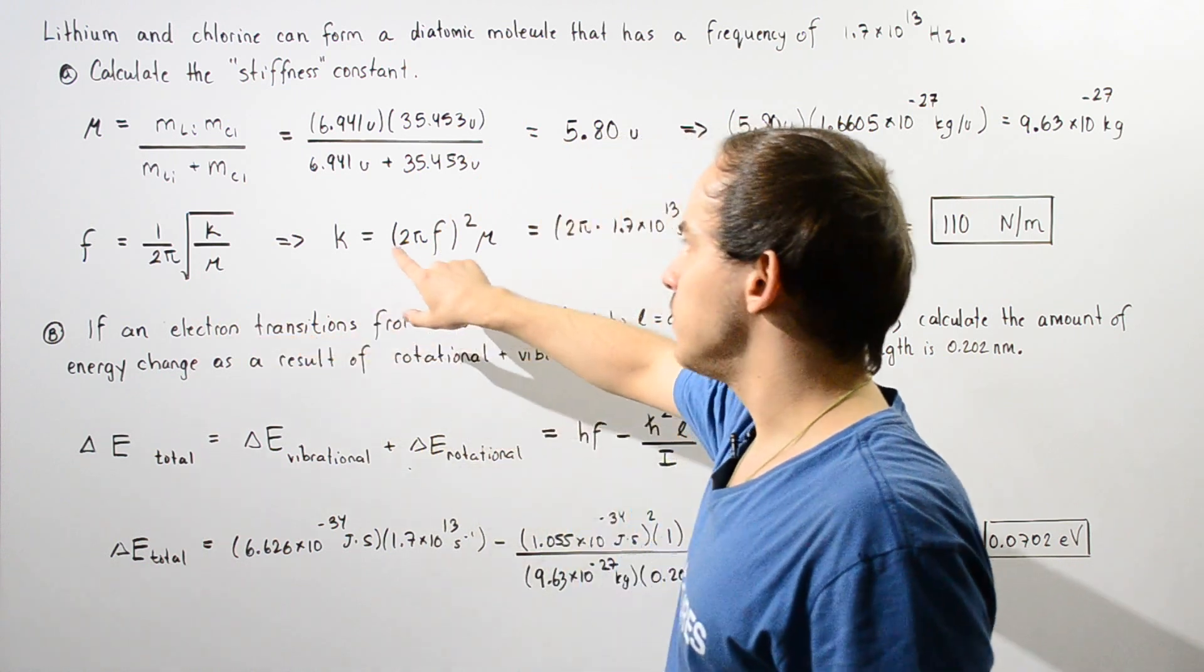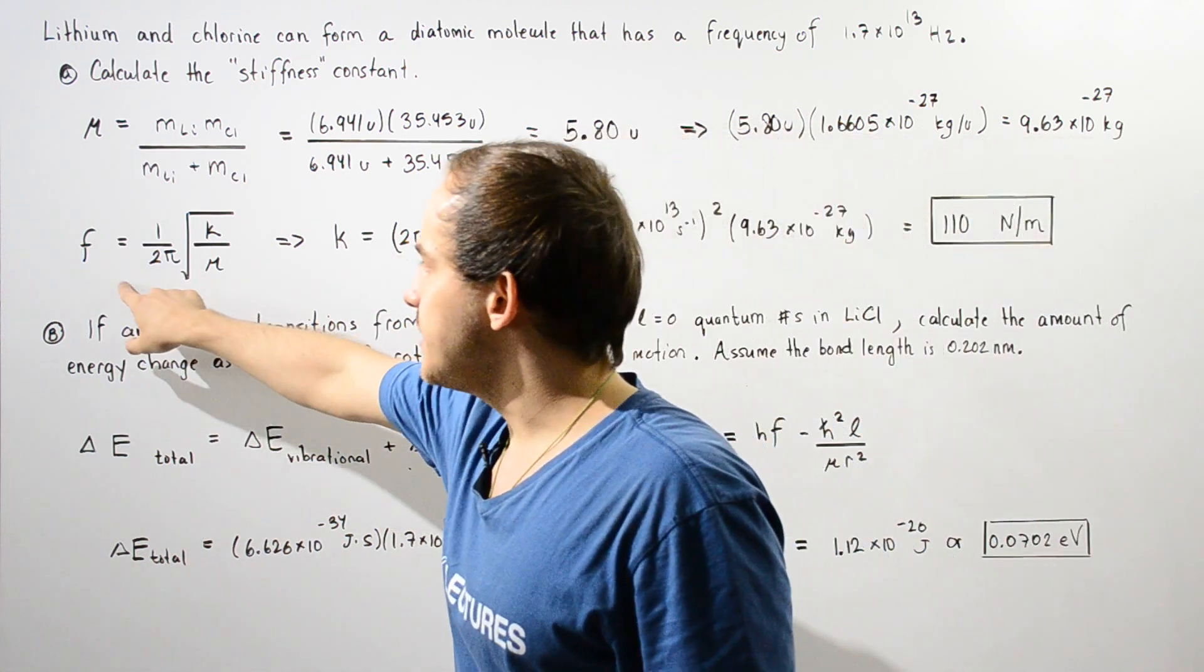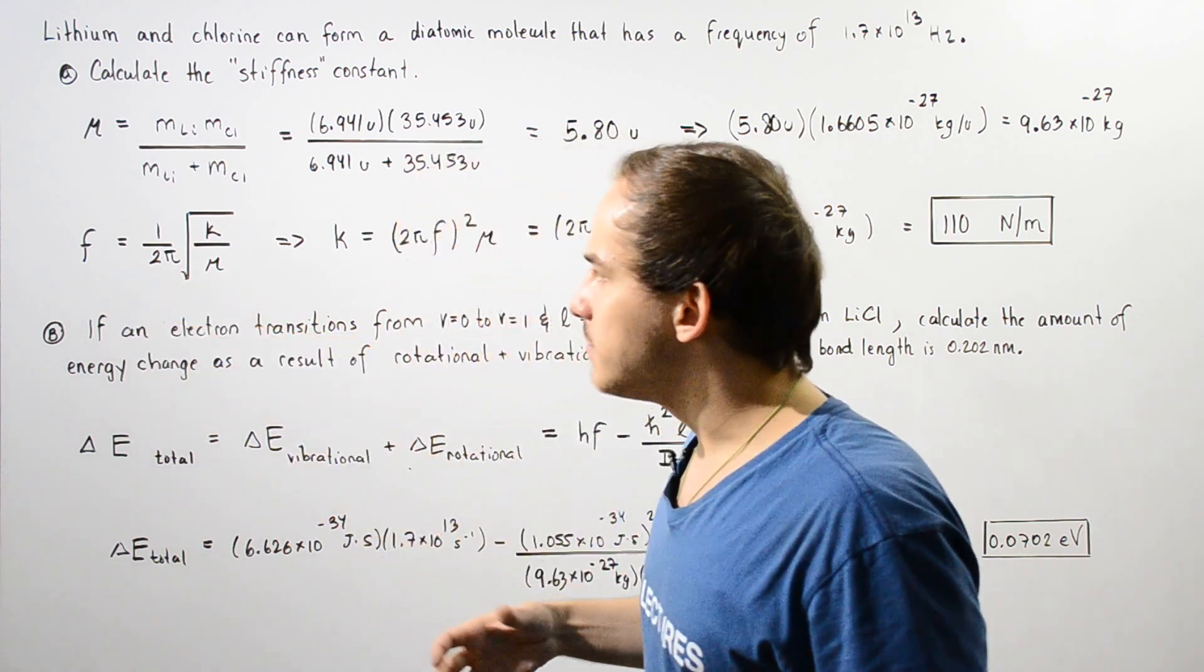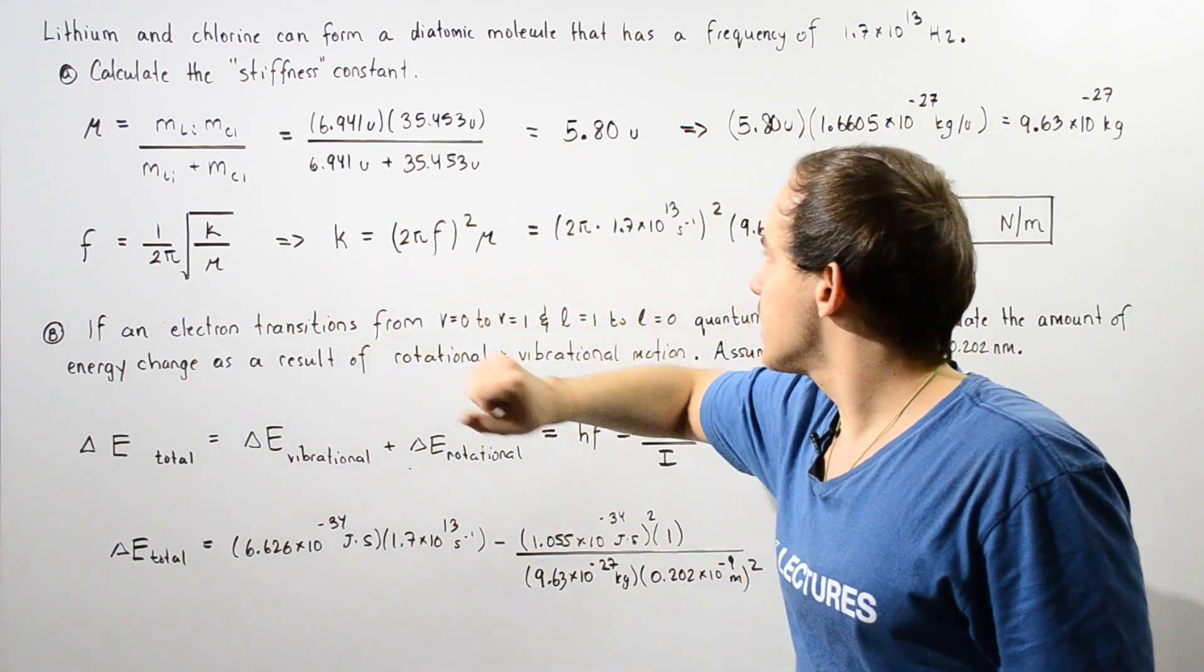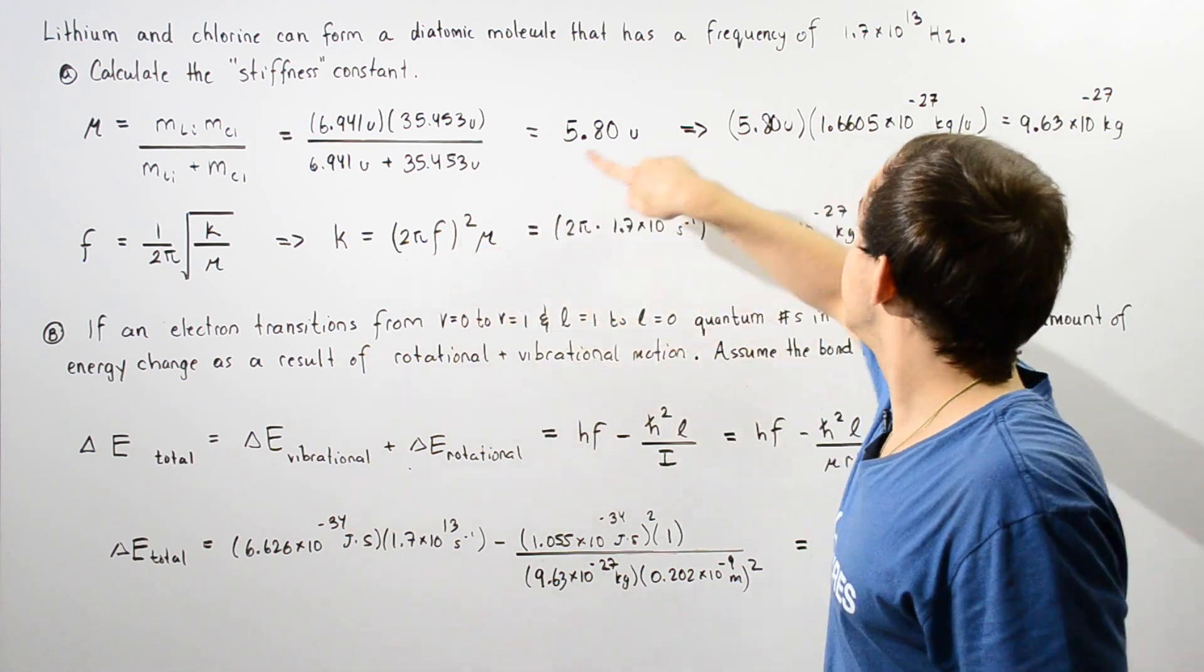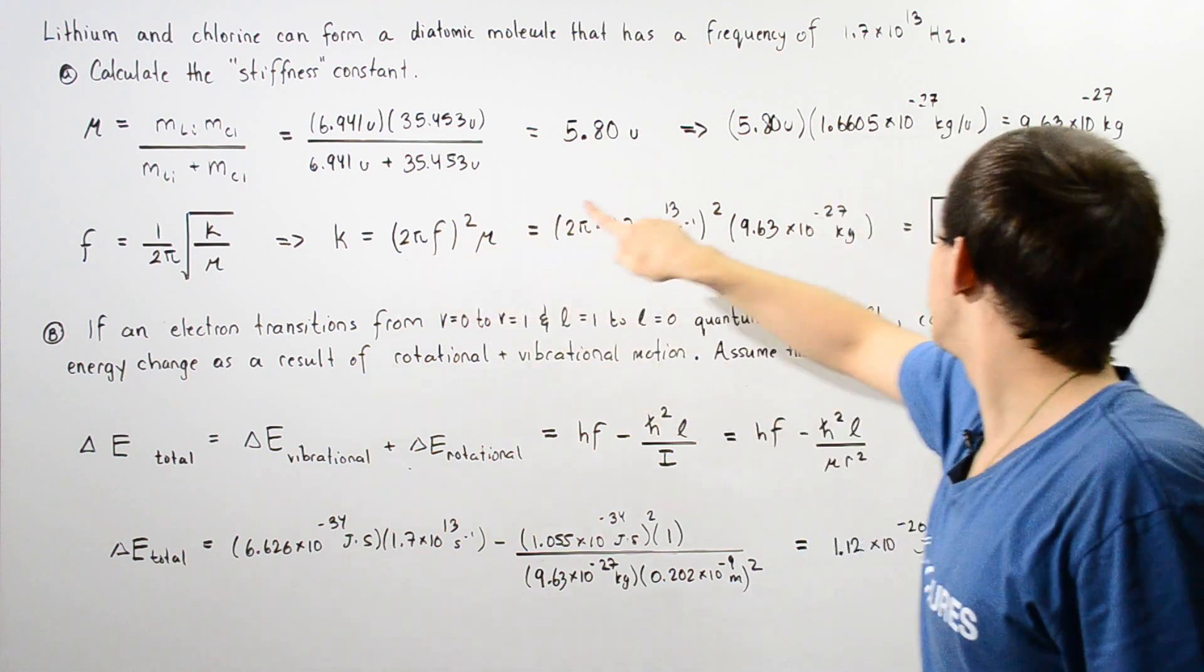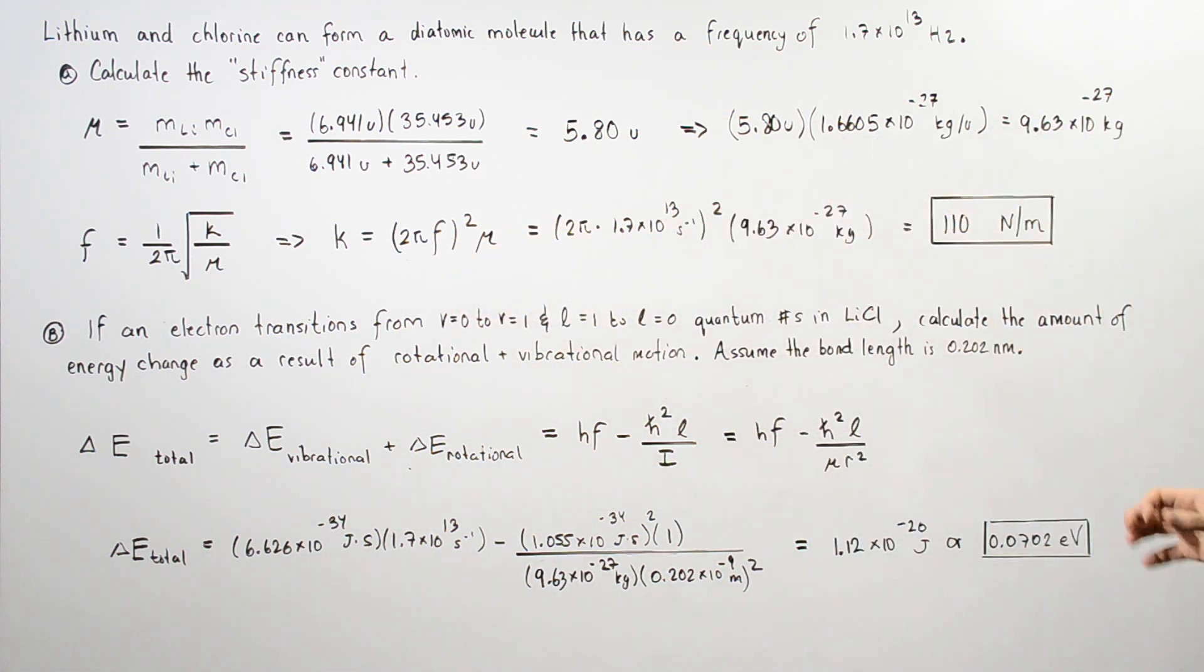Now we are ready to apply this equation. By the way, this equation comes from simple harmonic motion. If we plug in our values, we plug in this quantity for f and this quantity for mu, we get about 110 newtons per meter.